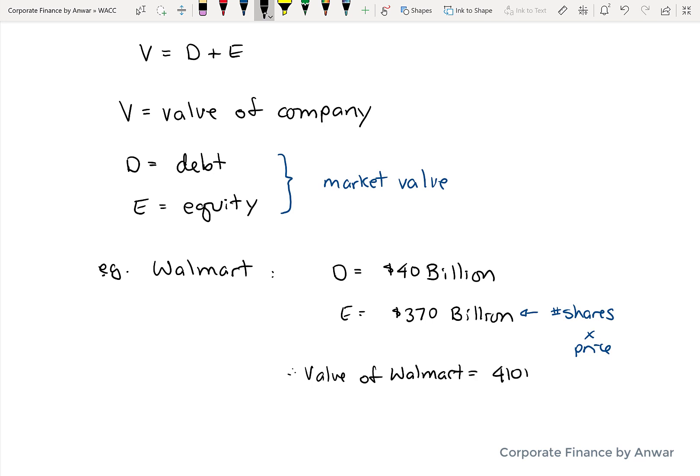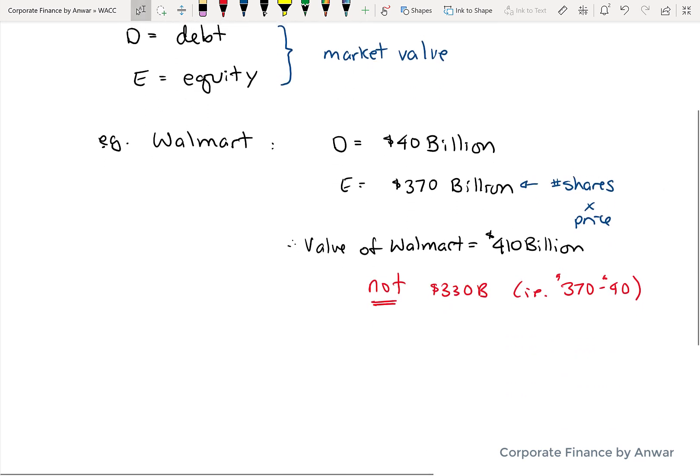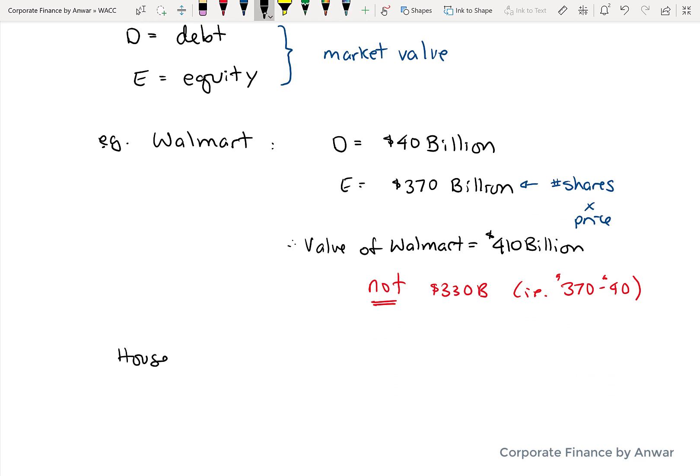So what's the value of Walmart? It's not the value of the equity. It's the sum of the two, D plus E. So it's going to be $410 billion. A common mistake people make is subtracting it, saying that it's going to be $330 billion. So the equity minus the debt. And that's not true. It's going to be the equity plus the debt. So if you wanted to buy Walmart and you were going to write a check, the amount of the check would have to be $410 billion because you're going to buy all the equity and you're going to pay off all the debt.